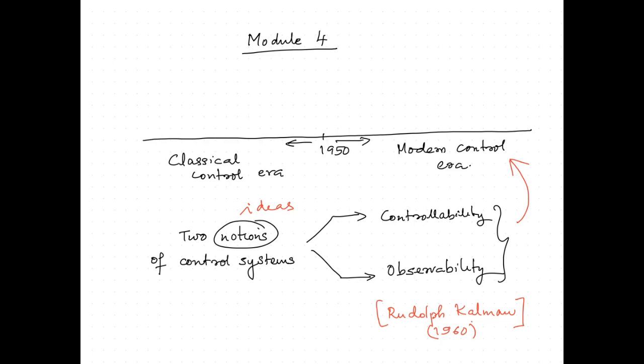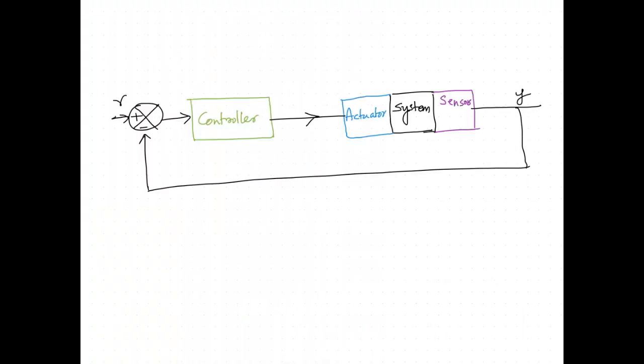This session basically aims to give a clear concept of controllability and observability; the mathematical descriptions will be there in upcoming videos. To discuss controllability and observability, one should have an idea about controller design. For a controller design, we should first identify the system to be controlled. The system will have certain actuators and sensors — the purpose of actuators is to impart control forces, and the purpose of sensors is for measuring the states.